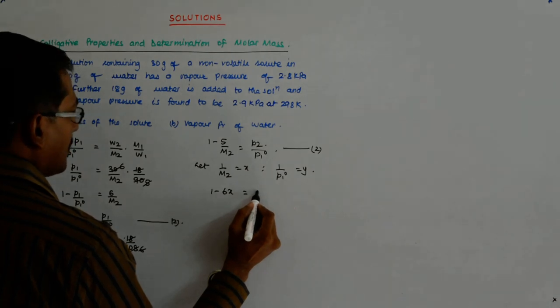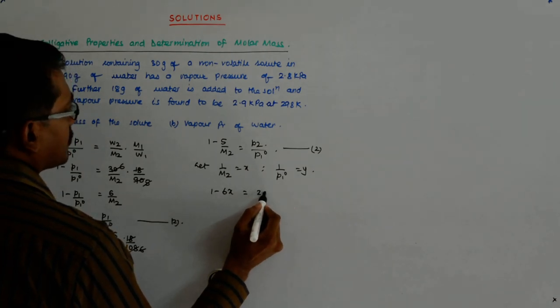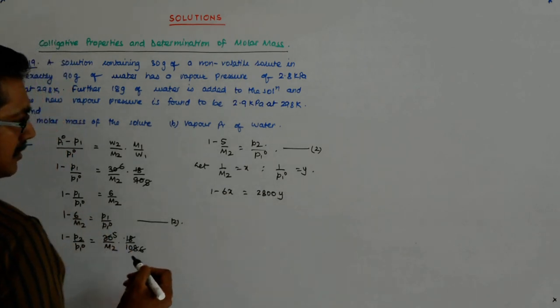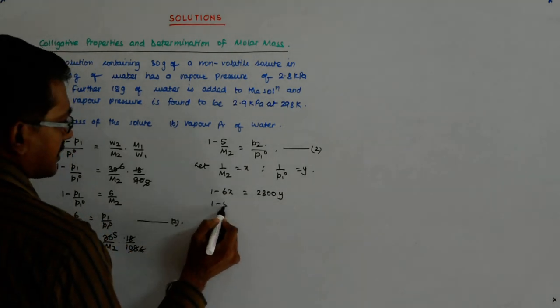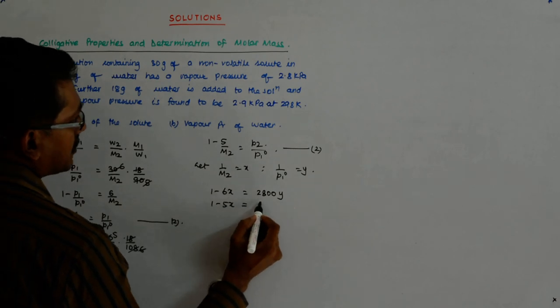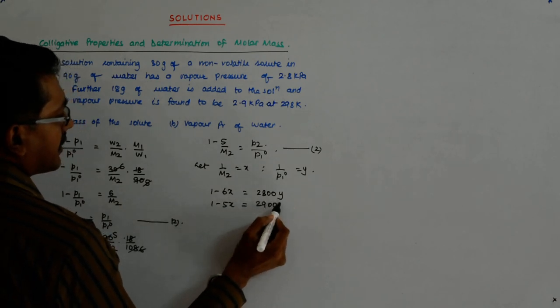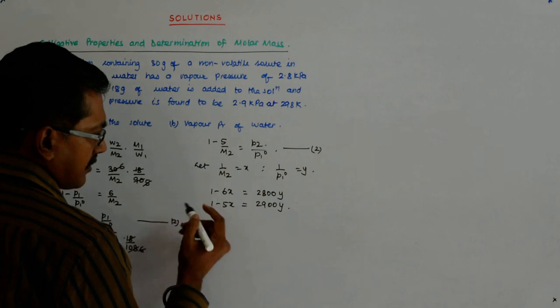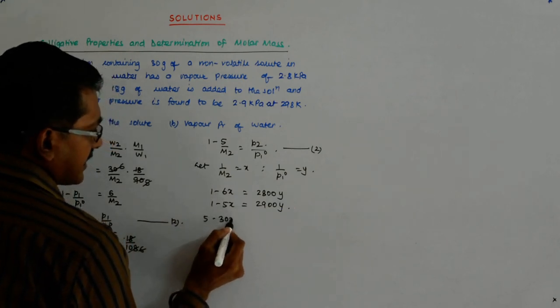This is equal to P1, that is 2.8 times Y. And 1 minus 5X is equal to 2.9 times Y, is it not? What to do? Multiply this by 5. So 5 minus 30X.